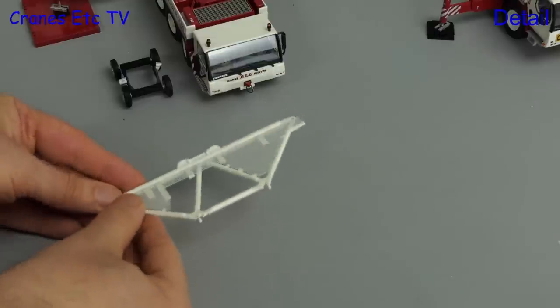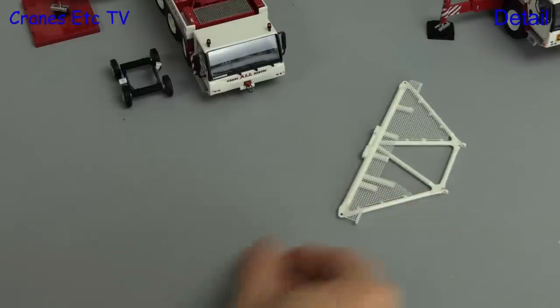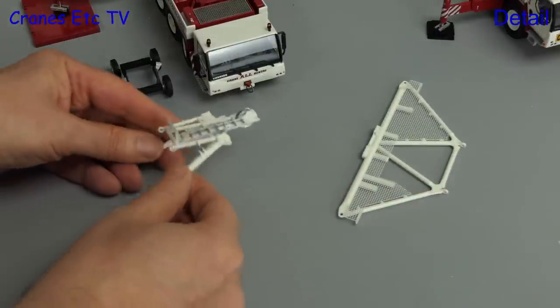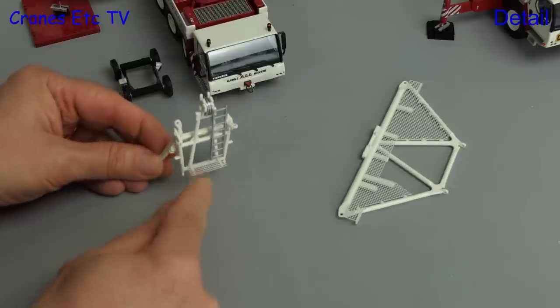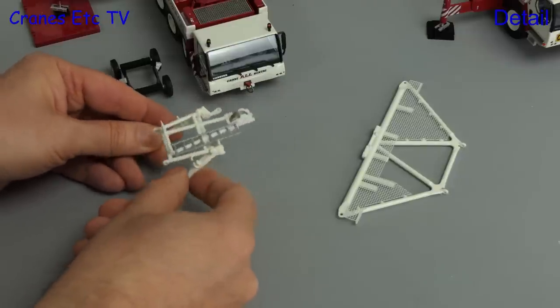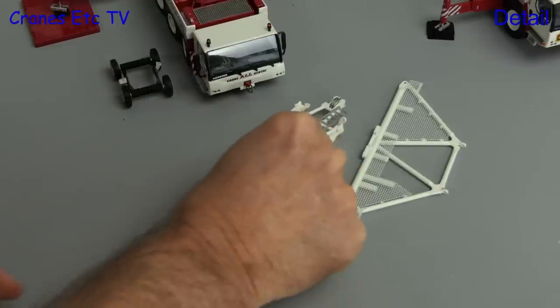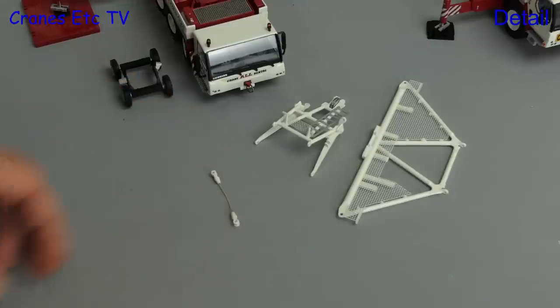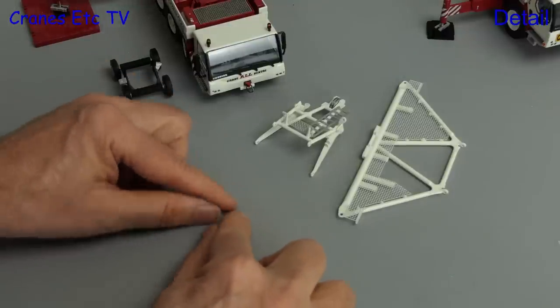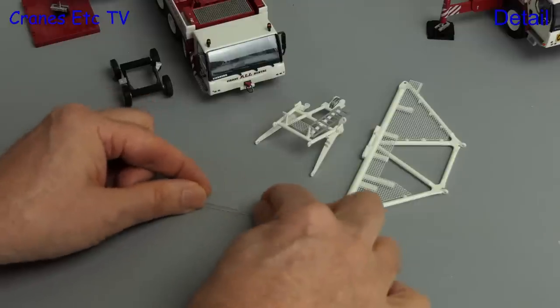Included in the kit are the various types of TY guying adapters and again these are all metal parts and they are very nice. Also included are the intermediate guy rod supports for very long jibs and these are interesting because they're actually made of springy material rather than the fixed length cables that you might expect.